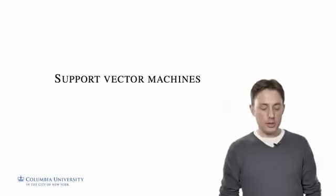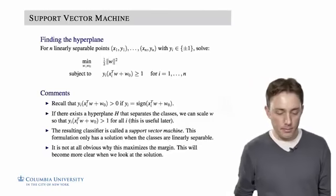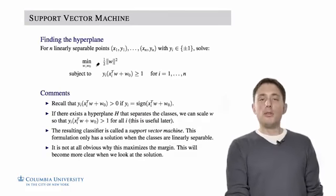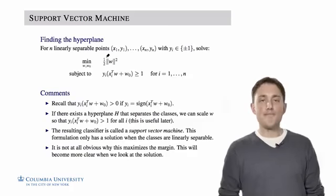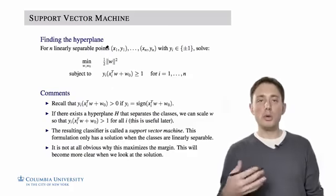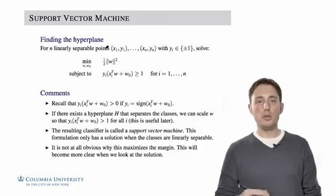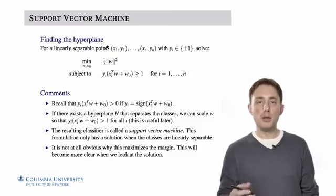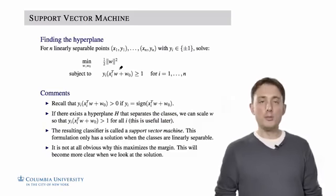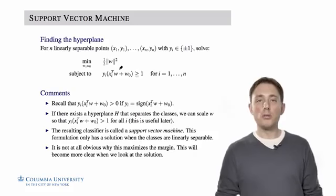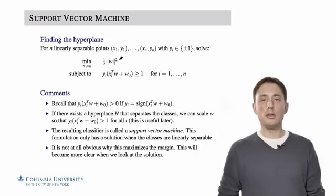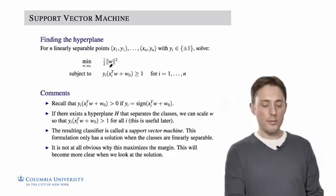That brings us to support vector machines. So here is the objective function that we're going to work with. This objective corresponds to what we would call a support vector machine. Intuitively, we'll make more sense of the name later. And we'll also show why this objective function should help us reach our goal of finding the max margin hyperplane. But for now, let's just look at the optimization program that we're trying to solve.